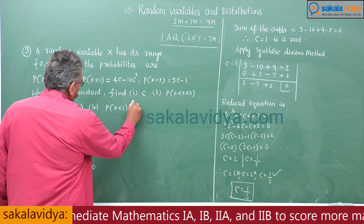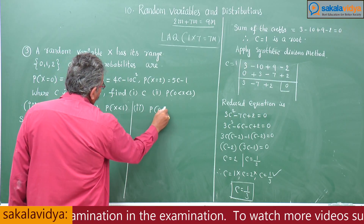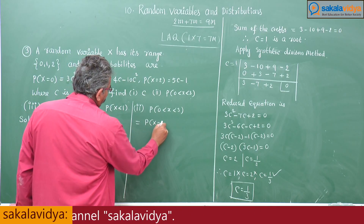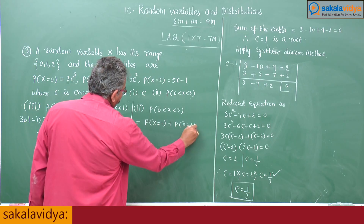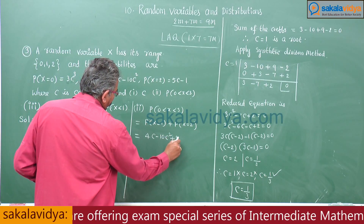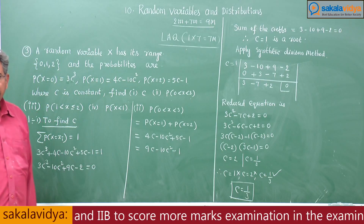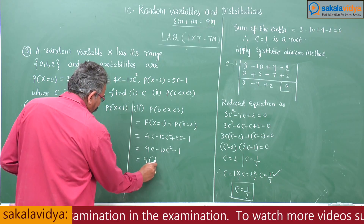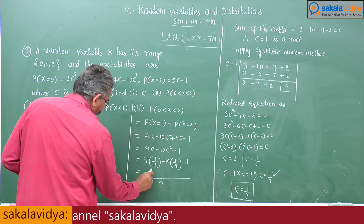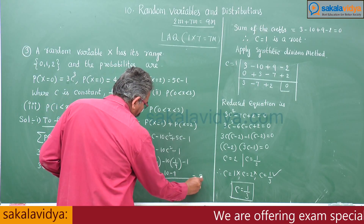Now for the second problem: P of 0 less than X less than 3. This equals P of X equal to 1 plus P of X equal to 2. P of X equal to 1 is 4c minus 10c squared, and P of X equal to 2 is 5c minus 1, giving 9c minus 10c squared minus 1. Substituting c equals 1/3: 9 times 1/3 minus 10 times 1/9 minus 1. The LCM is 9: 27 minus 10 minus 9 over 9 equals 8/9.